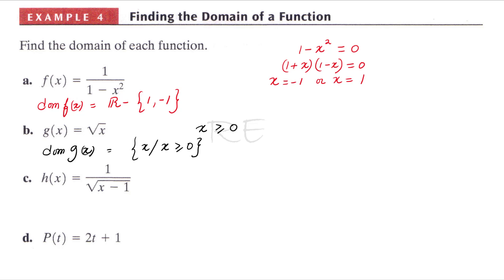For h(x), the radicand x minus 1 must be strictly greater than 0. Can't be negative and cannot be equal to 0 either. When we solve it, x is strictly greater than 1. So the domain of h(x) is the set of all x such that x is strictly greater than 1.